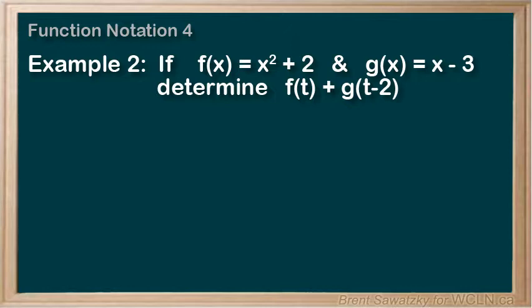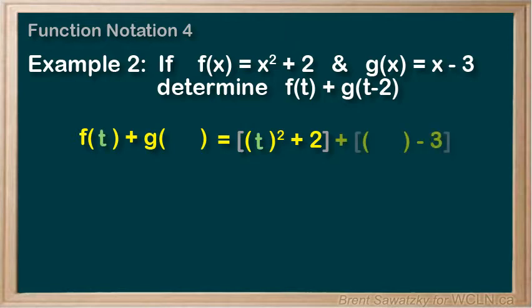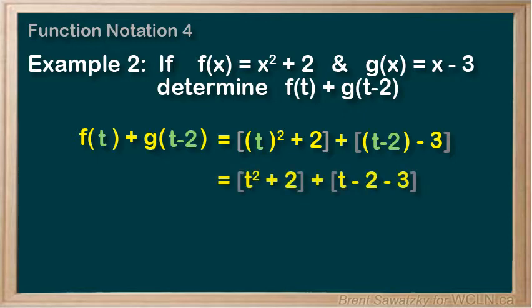f of t plus g of t minus 2 equals t squared plus 2 plus t minus 2 minus 3.